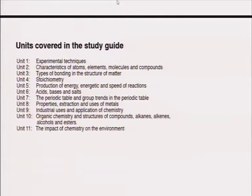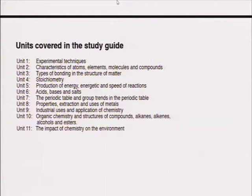Unit 6 orientates you to the differences between acids, bases and salts. Unit 7 is about the periodic table and understanding how it is structured. Unit 8 looks at properties, extraction and uses of metals. Unit 9 looks at industrial uses and application of chemistry. Unit 10 looks at organic chemistry and structures. And then the last unit looks at impacts of chemistry on the environment.